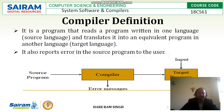The high-level language is the language which we understand as a programmer, and the target language is the language understood by the machine. This is the job of the compiler: to convert the source program into the target program. It also reports any errors in the source program to the user.